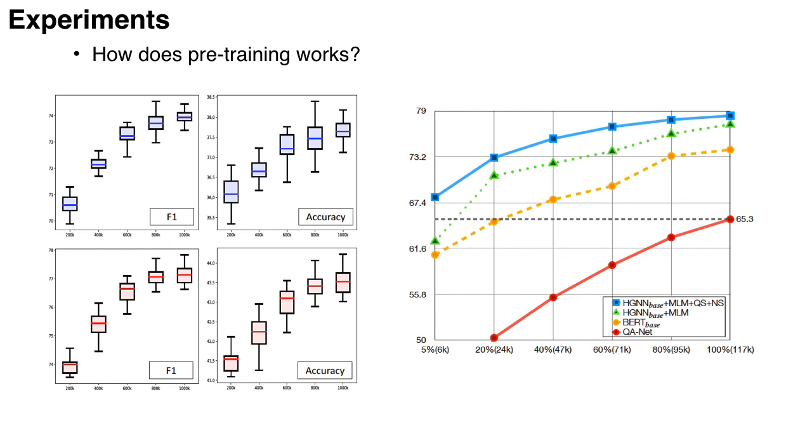And the right figure shows that with only 5% of the whole training data, our model could achieve a better result compared to QANet, which is trained on the full dataset. This shows that pre-training is very data efficient and very useful for low-resource scenarios.